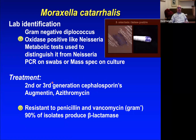Treatment: you cannot use penicillin or amoxicillin because 80–90% of isolates have acquired a plasmid conferring resistance to both penicillin and vancomycin. It does respond to augmentin (the beta-lactamase inhibitor clavulanate overcomes the resistance). Zithromax and cephalosporins also work. The most important thing to remember: do not use penicillin on Moraxella catarrhalis.